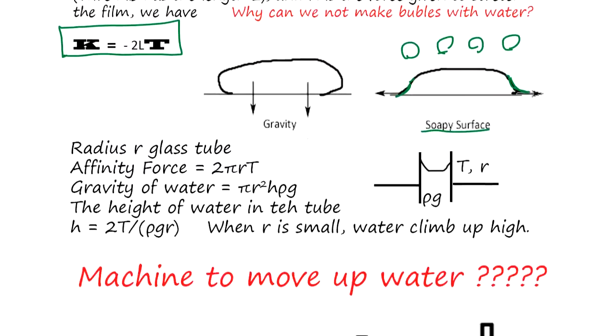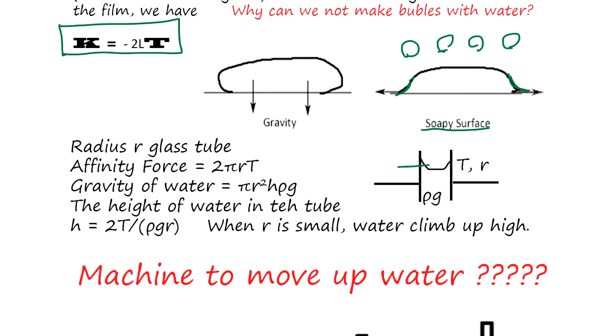Now how much does this go up? This height is h and let's calculate. This radius is r. Affinity force is 2πr peripheral times t tension.